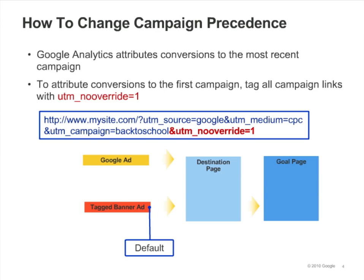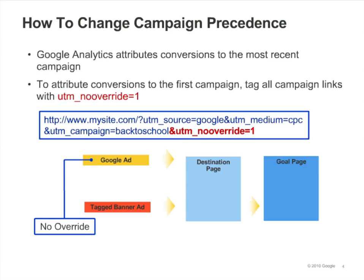To change this behavior, you can tag all of your campaign links with UTM_nooverride=1. If you do this consistently with all of your campaigns, Google Analytics will attribute conversions to the first referring campaign instead of the most recent one. Note that the UTM no override setting can be used in conjunction with auto-tagging.